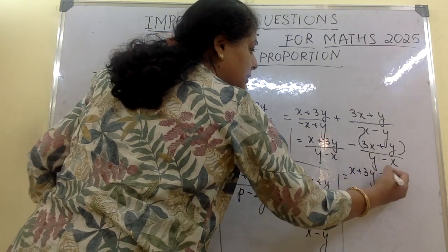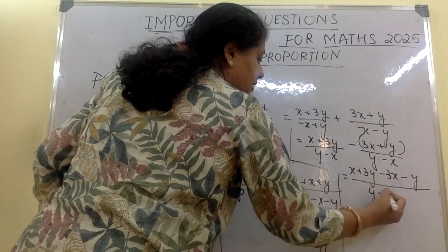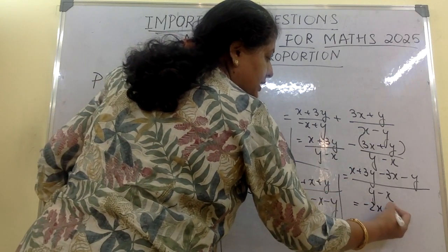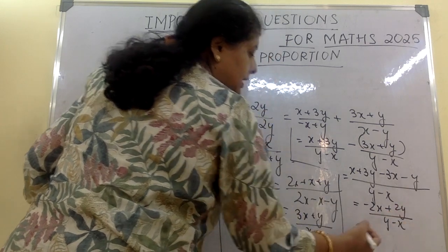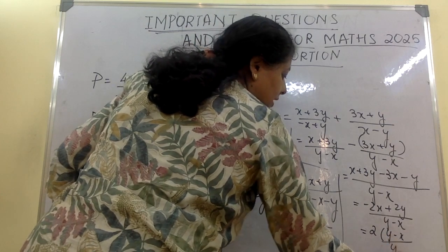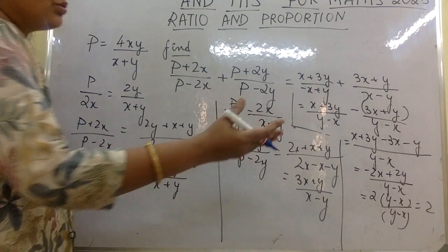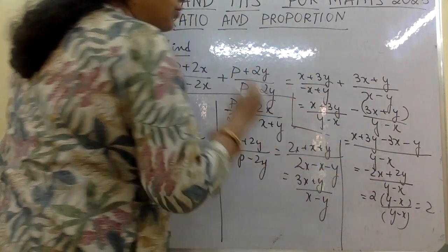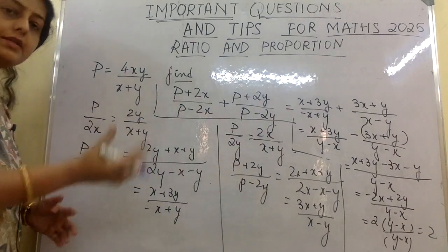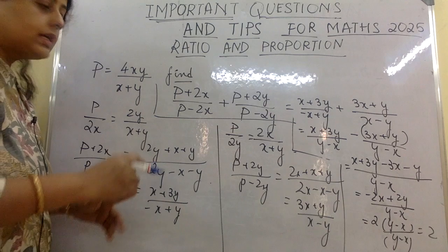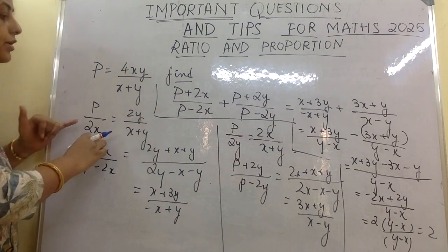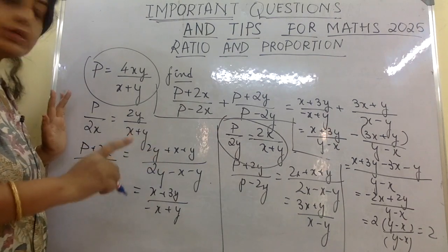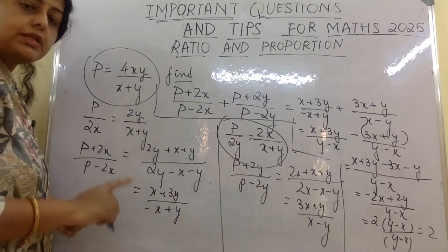Simplifying: (−2x + 2y) / (y − x) = 2(y − x)/(y − x) = 2. The answer is 2. The key idea in this question is knowing how to rewrite p/2x and p/2y from the given expression in order to apply componendo and dividendo — the rest follows easily.